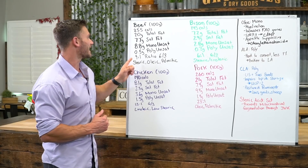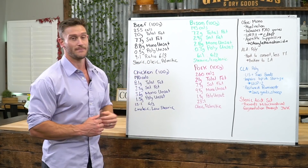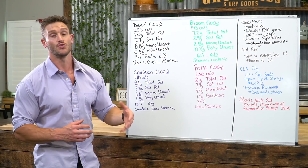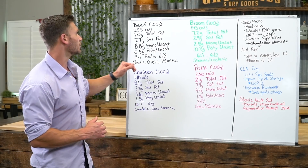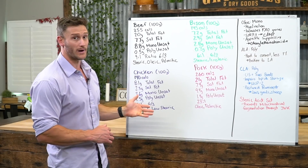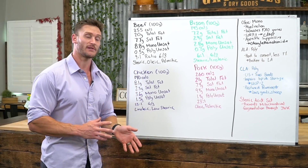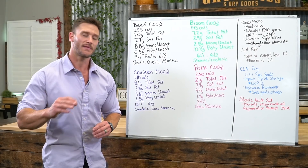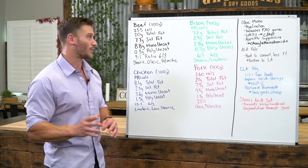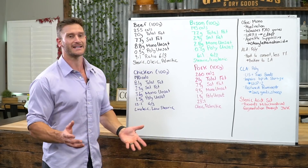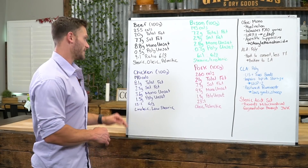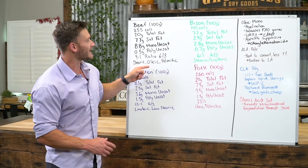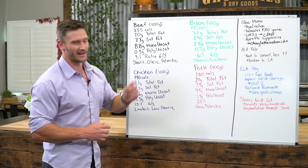With grain-fed beef, you're looking at a 9-to-1 ratio of omega-6 to omega-3 — not great. Grass-fed beef brings that down to about 2-to-1 or 3-to-1, way better. Omega-3 is anti-inflammatory, builds the phospholipid bilayer, and doesn't store as fat as easily. Omega-6s store as fat more readily and trigger inflammation, so be careful with meat quality. A little grain-fed meat isn't going to kill you, but grass-fed, grass-finished is always preferable. Beef contains stearic acid, oleic acid, and palmitic acid, which we'll break down shortly.